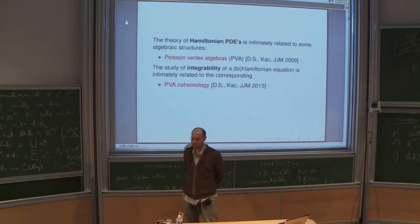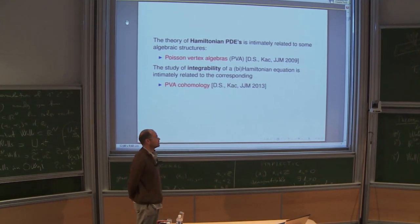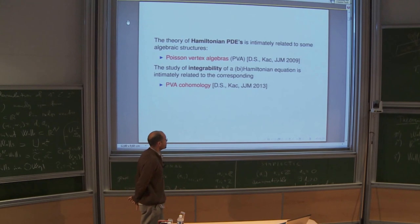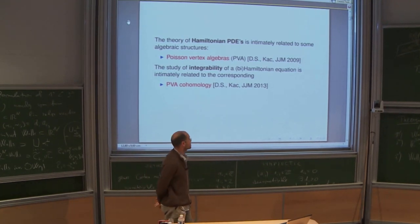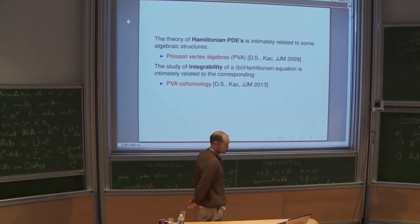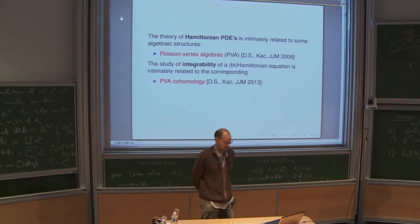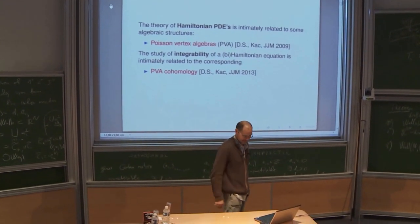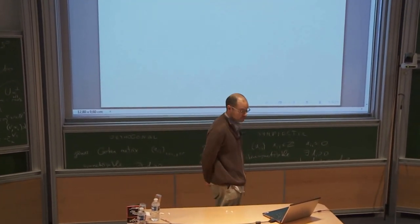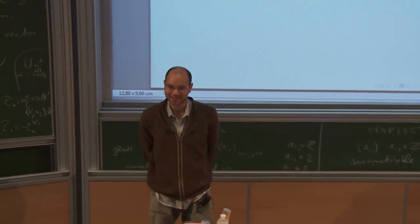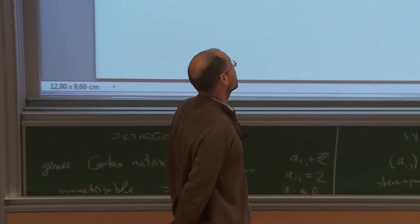These algebraic structures are known as Poisson vertex algebras, which are intimately related to the theory of Hamiltonian equations, and the corresponding cohomology complex called Poisson vertex algebra cohomology. These objects were introduced by Victor Kac and myself in the past few years. But before talking about Poisson vertex algebras, I will talk about the most classical object: just Poisson algebras that everybody knows.